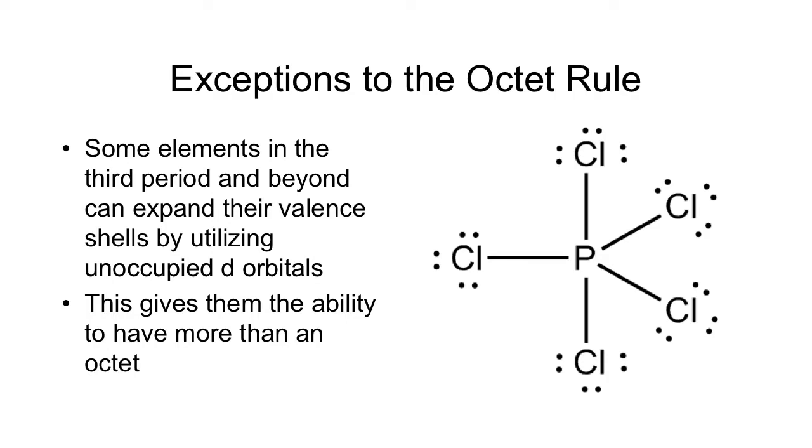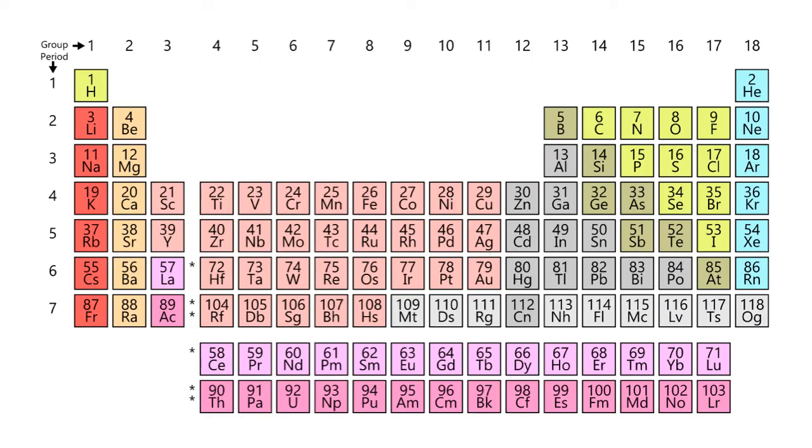And so if we look at the periodic table, what this really means is that there's only a very small number of elements that actually really have to follow the octet rule. So we're only talking about nonmetals and so that's what's shown in yellow here because they're the ones that can covalently bond.